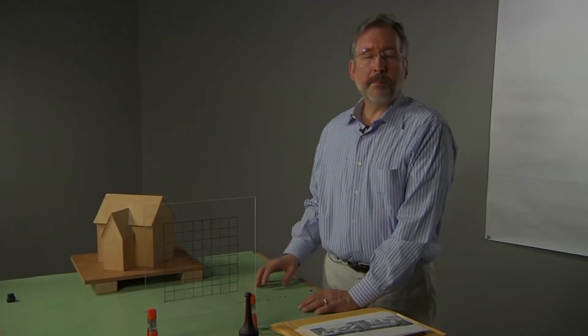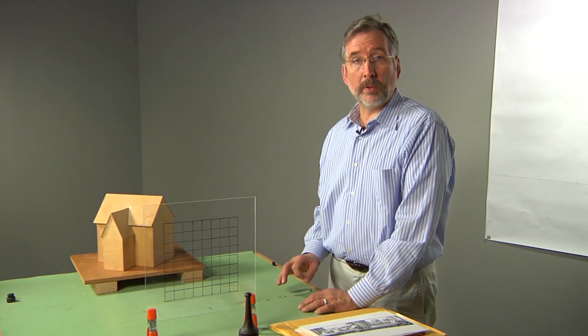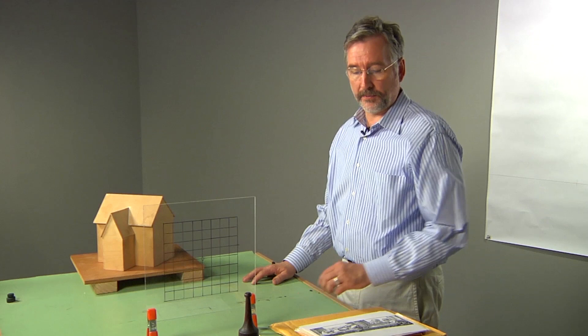One of the best ways to understand the theory of linear perspective is to make a drawing employing an Albertian veil. As the name implies, an Albertian veil was first advocated by Alberti, one of the inventors of linear perspective. As you can see in this engraving by Durer, the Albertian veil is placed between the artist and the model.